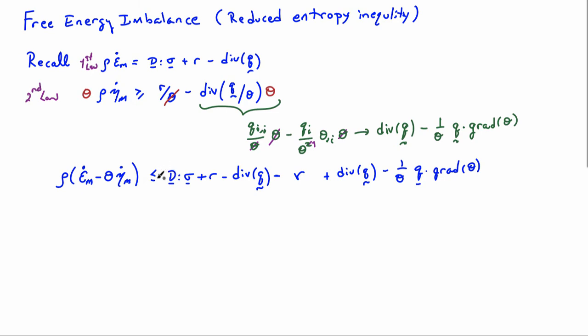So these three terms here are coming from the first law. And the next set of terms here are coming from the second law. And now you can see that a number of things are going to cancel out here. So the R's will cancel and the divergences of Q will cancel. So I'm only left with two terms on the right hand side.